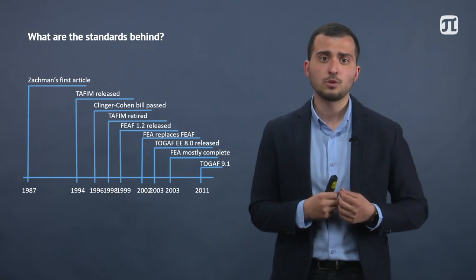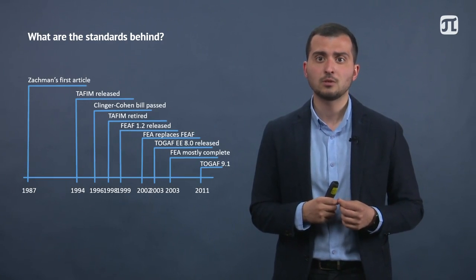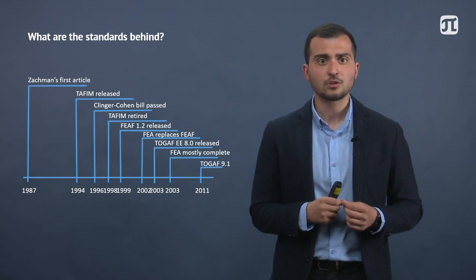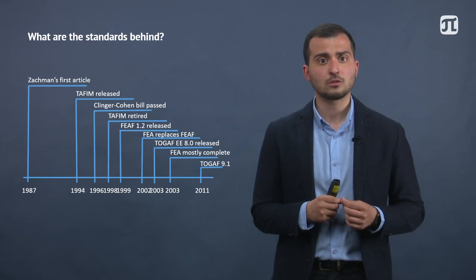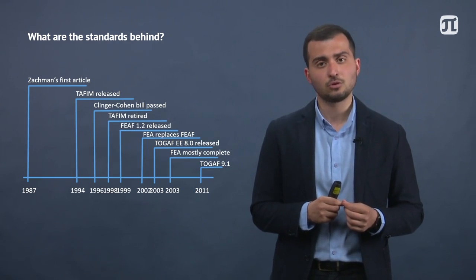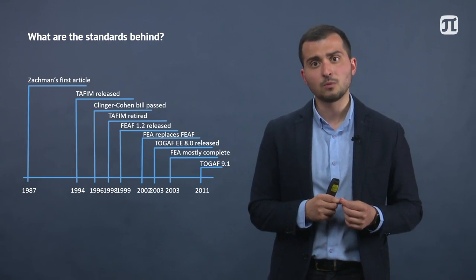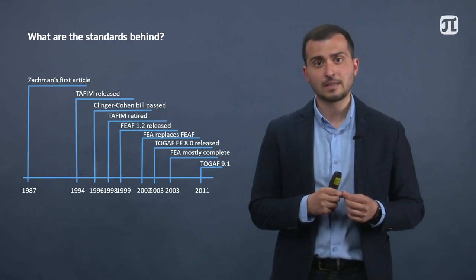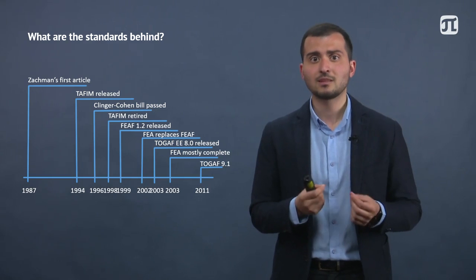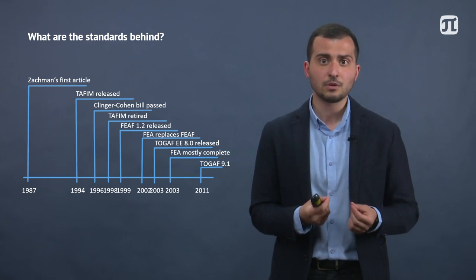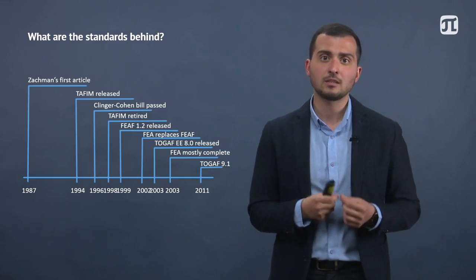TOGAF, which we use today, has actually appeared in 2011, while the very first mention of enterprise architecture notation was in 1987 by John Zachman. To summarize the timeline: the 1960s saw the emergence of BSP; in the 1980s to 90s the first EA works appeared; and in the 2010s, modern EA frameworks emerged.